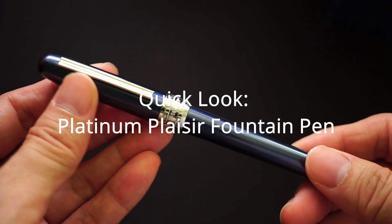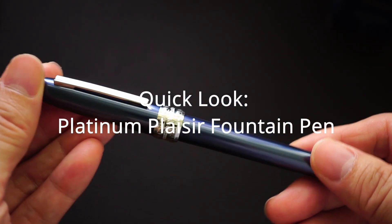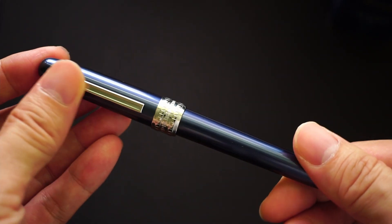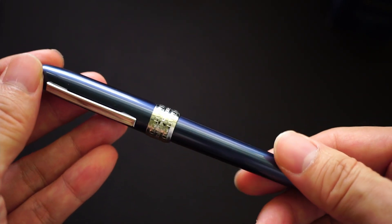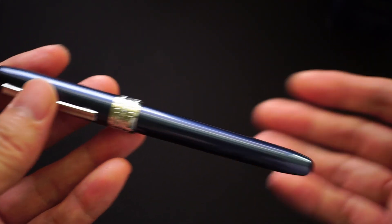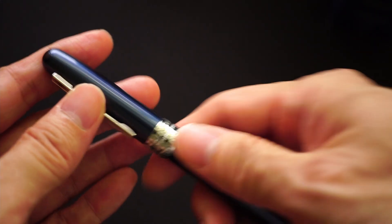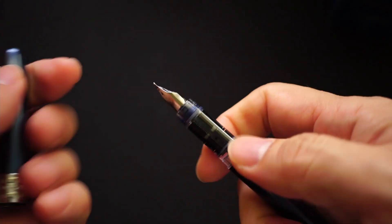Today we're going to be looking at a pen which is a continuation of sorts from my last video which was on the Faber Castell Loom. Obviously this is not the Loom, it's actually a Platinum Placer.